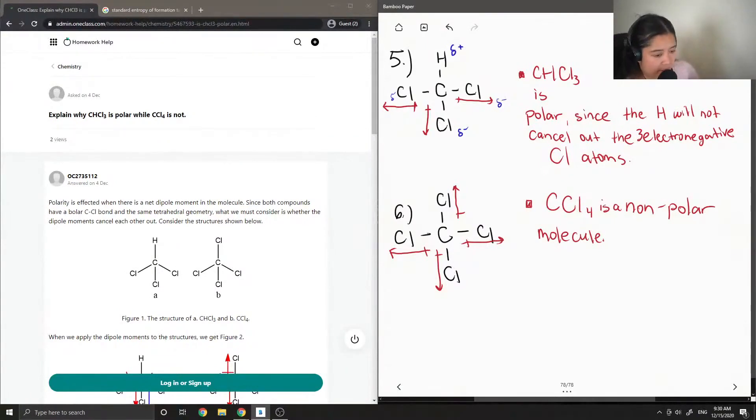So this is a nonpolar molecule since it's symmetrical and the chlorine atoms will cancel each other out, so we have no dipole moment. So let's see what the junior tutor said.